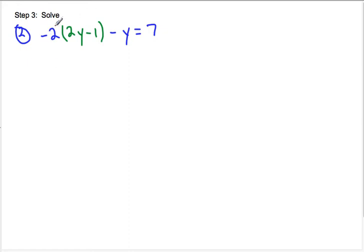So we have negative 2 times 2y. So we have negative 4y. And then here, this can be confusing to some people when there's distributive property and also subtraction and a negative.